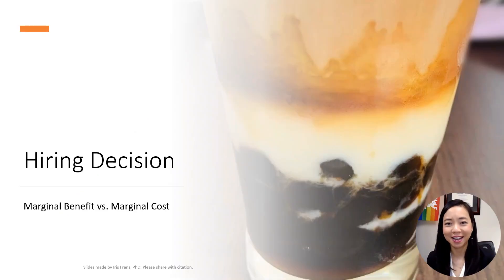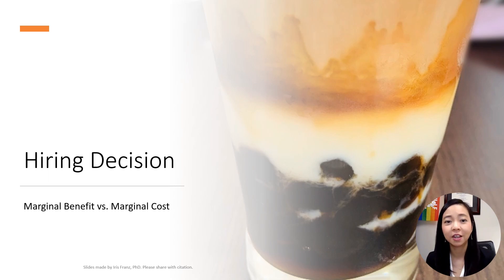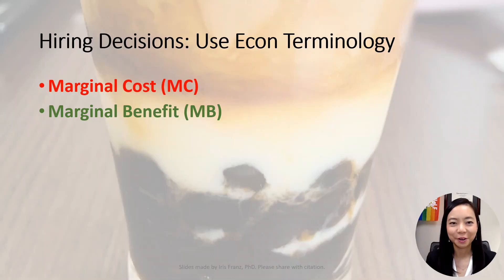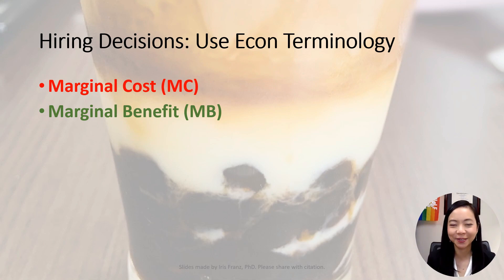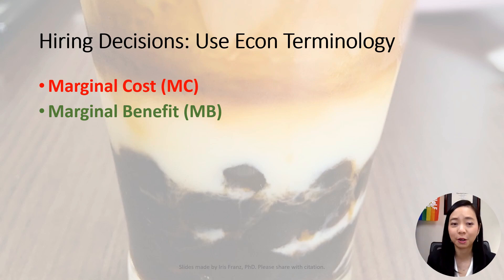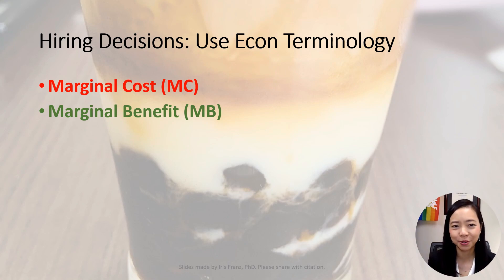Next, we will talk about the hiring decision. In a nutshell, we will compare the marginal benefit and the marginal cost to determine how many workers to hire. From now on, we will just focus on the labor resource. How many workers do I hire? That depends on my cost and benefit analysis. An economist will always compare the marginal benefit and the marginal cost to determine how many workers to hire.